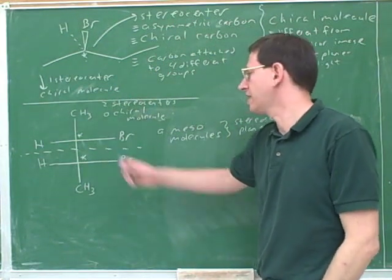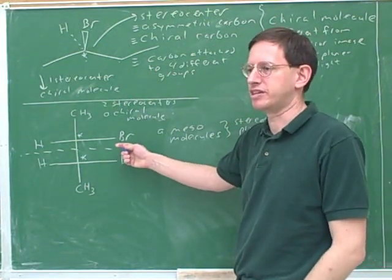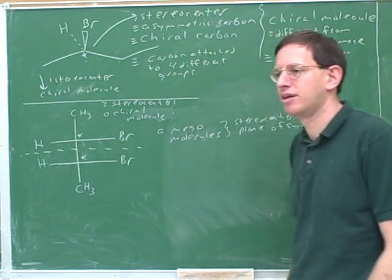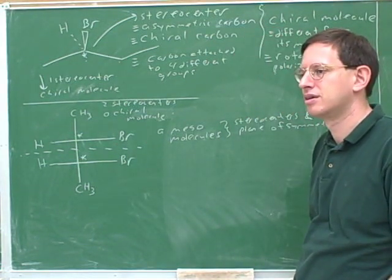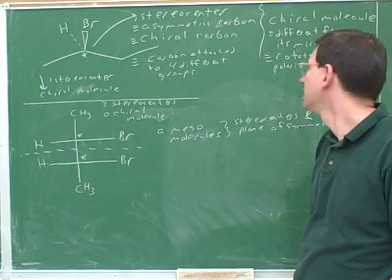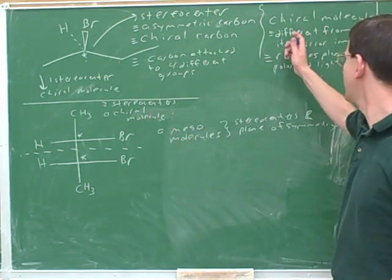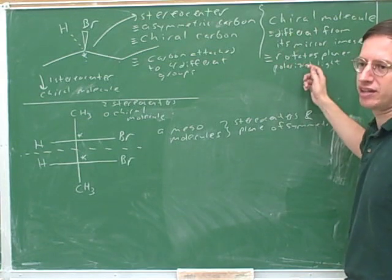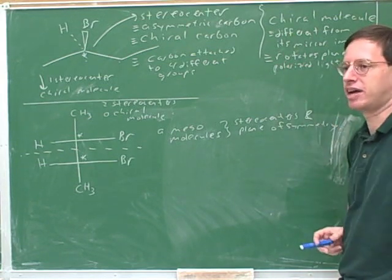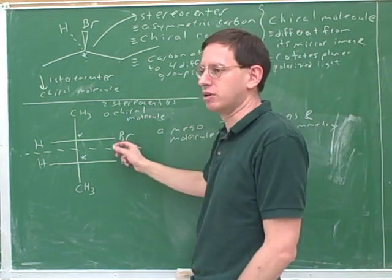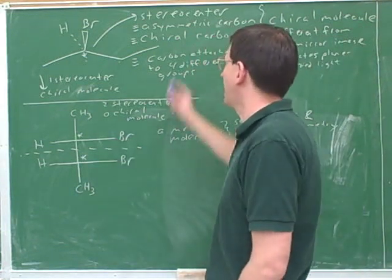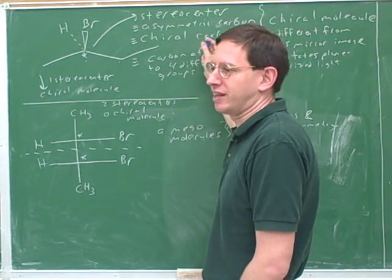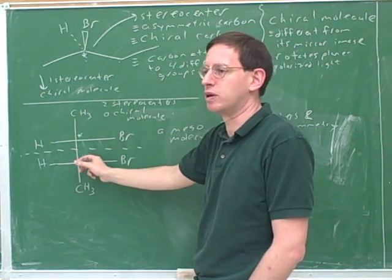Would this molecule rotate plane polarized light? No, because it's an achiral molecule. One of the definitions of achiral is that chiral molecules rotate light, so an achiral molecule does not rotate light. Meso molecules never rotate plane polarized light despite having chiral carbons. Chiral carbons might give you the potential to rotate light, but if they cancel each other out, you still won't rotate the light.